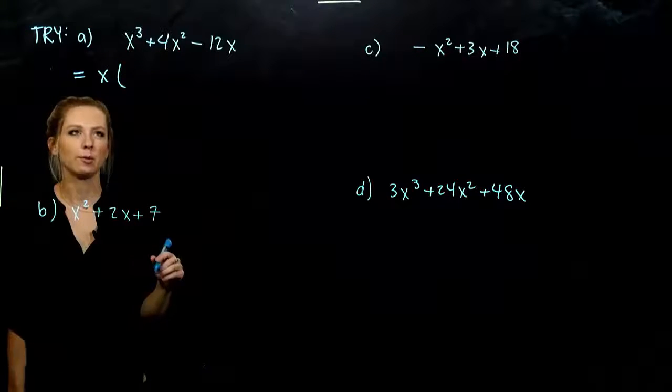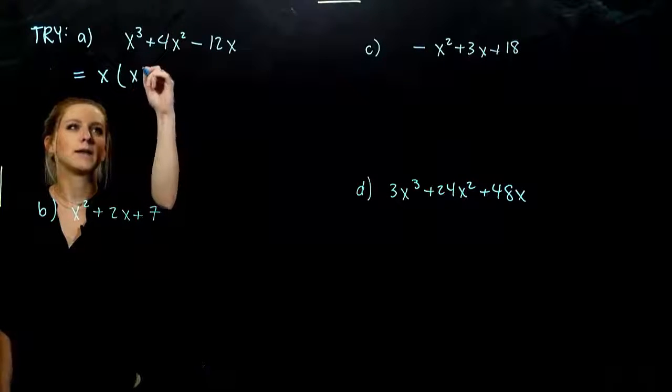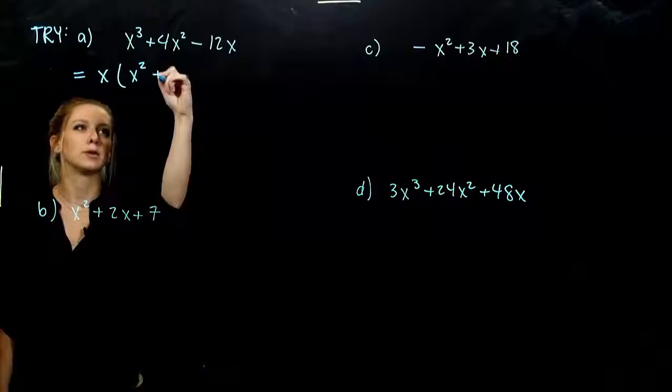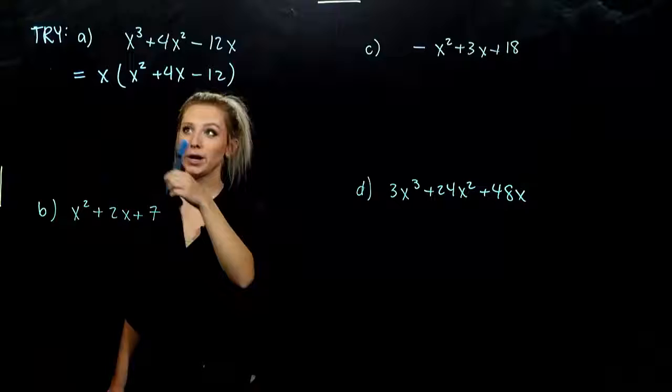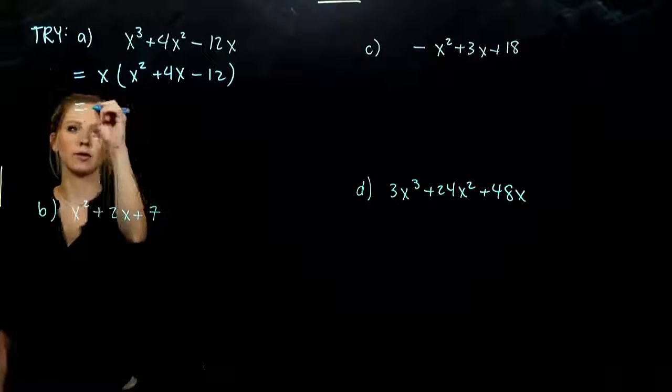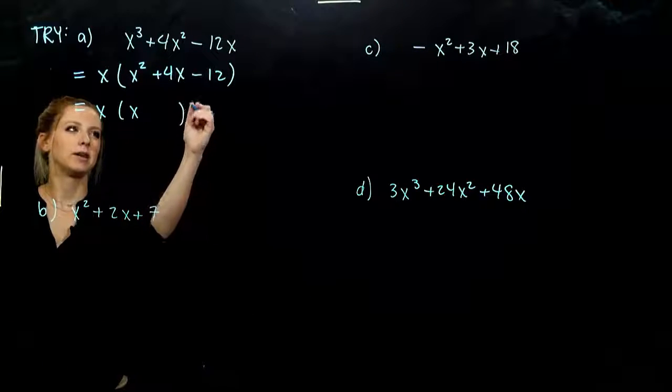So looking at part A, what do they all share in common? A factor of x. And when we take that out, what were you left with? Now I have two factors in my first term, one in the second, none in the last. Now we know how to deal with those. There's a one out on the front. So I know it's going to be an x and an x.